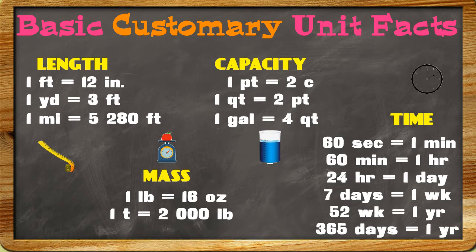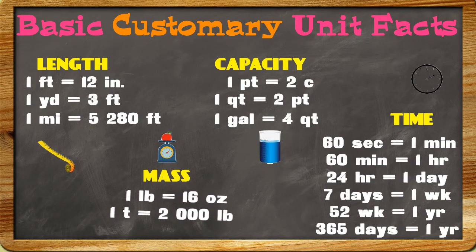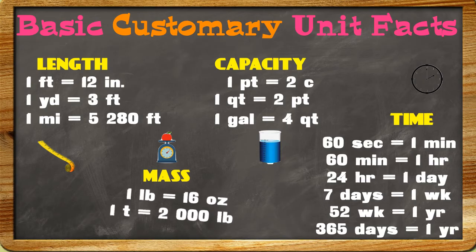To remember the customary units for mass, here is this jingle: 16 ounces in a pound, 2,000 pounds in a ton — tons are bigger than pounds, and ounces are the smallest ones.